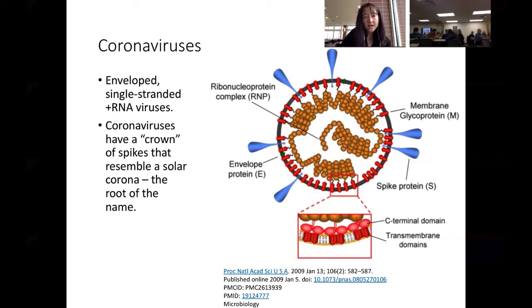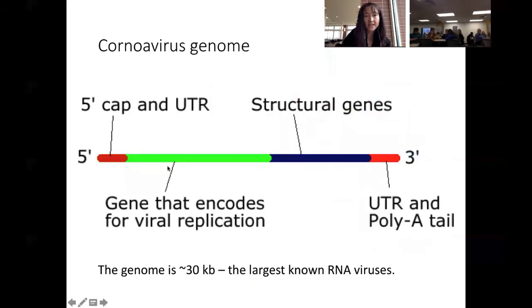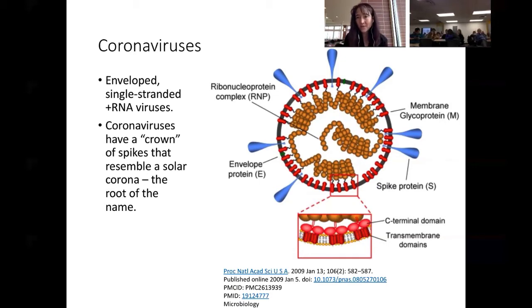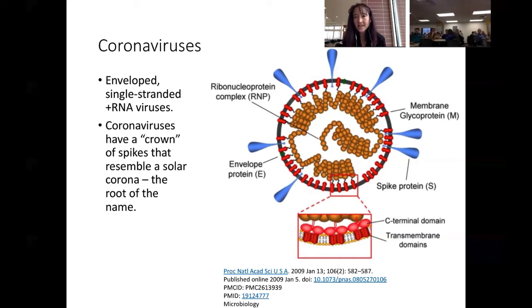Let's zoom in and look at the genome. Remember it is a plus-sense RNA. What does it mean to be a plus RNA? What would be different if it were a minus or negative sense? Does anybody know what that refers to? Someone suggests it's like a charge — that's a really good guess. But instead, it has to do with the directionality of it.